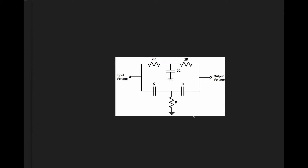There is a resistor through a capacitor to ground here, which forms a low pass filter, and there is a capacitor to a resistor to ground, which forms a high pass filter.